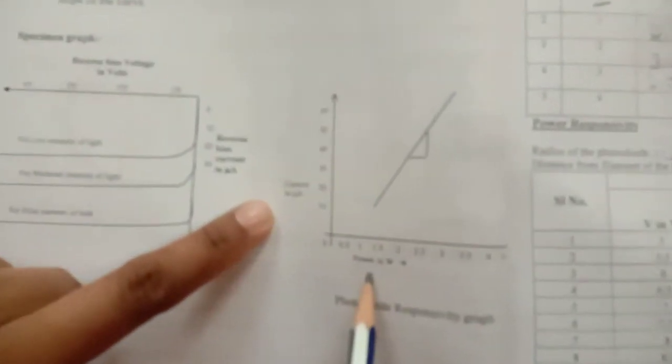Likewise, if you do it, you get so many values here. Then the corresponding photodiode current you have already recorded. Use these two columns of data in order to plot a graph of current in microamperes to power in watts.